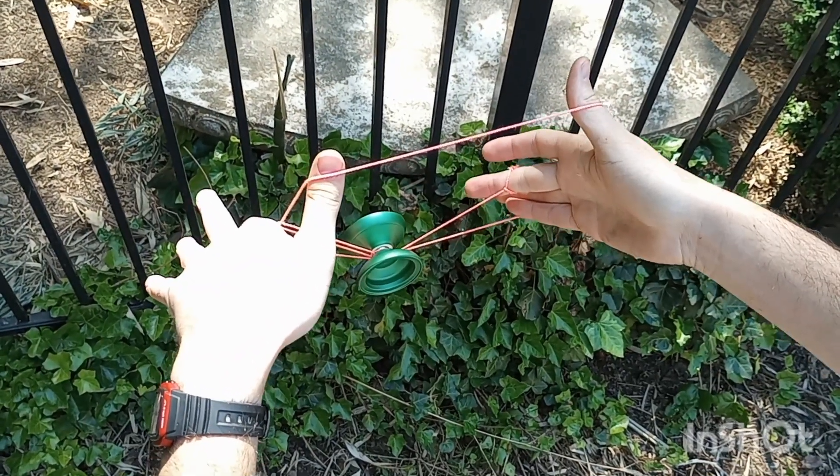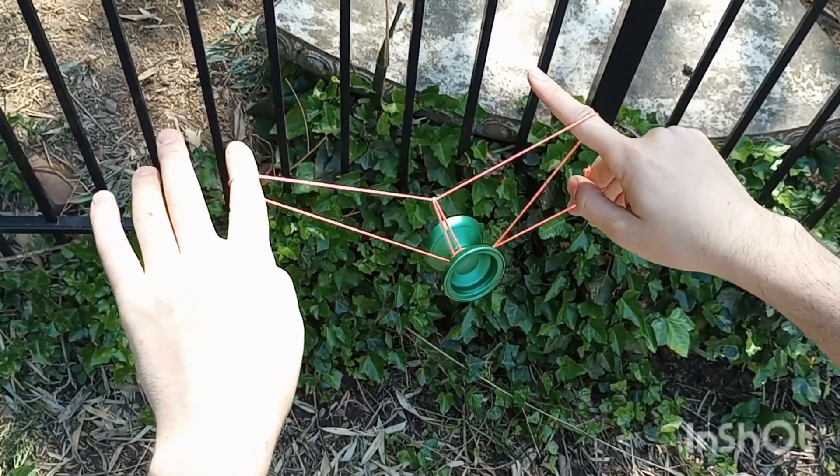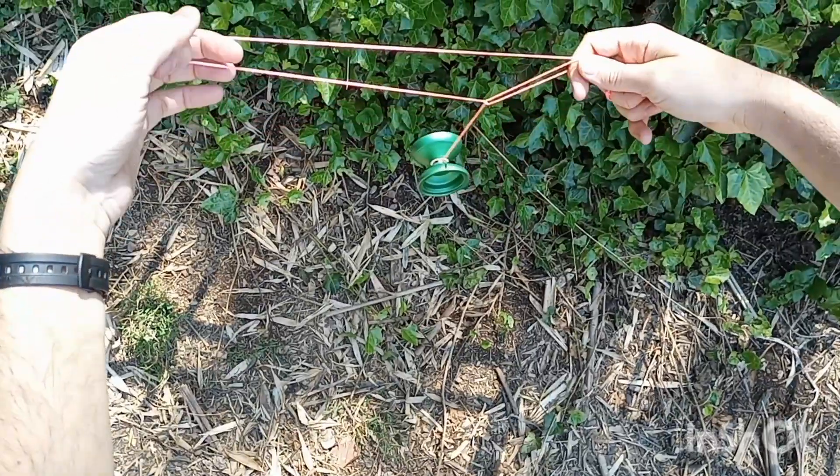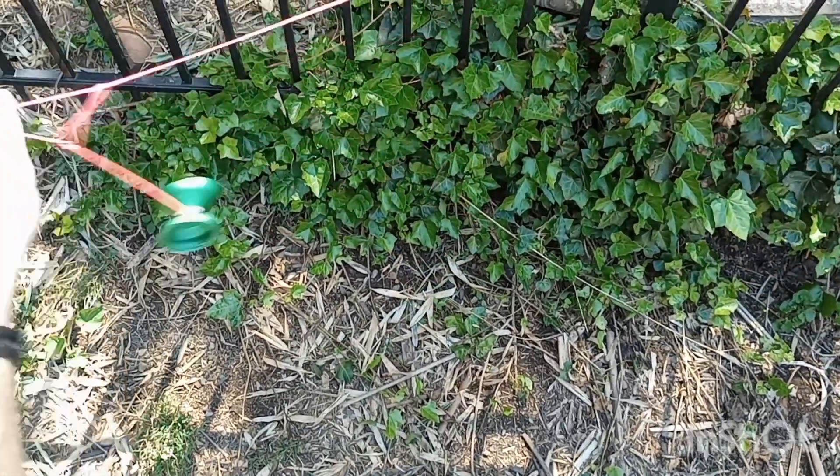And you let go of your not throw hand thumb and just position it so that you're in a heart mount. And then you're going to flip it forward like that and let go and then you have your broken heart.